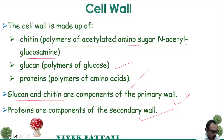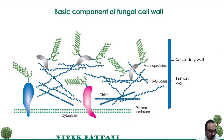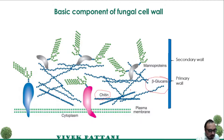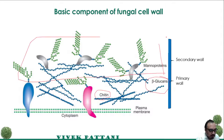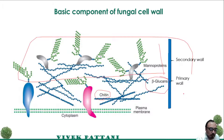Please check this figure: the primary cell wall is made up of chitin and beta-glucans. The secondary cell wall is basically made up of mannoproteins.